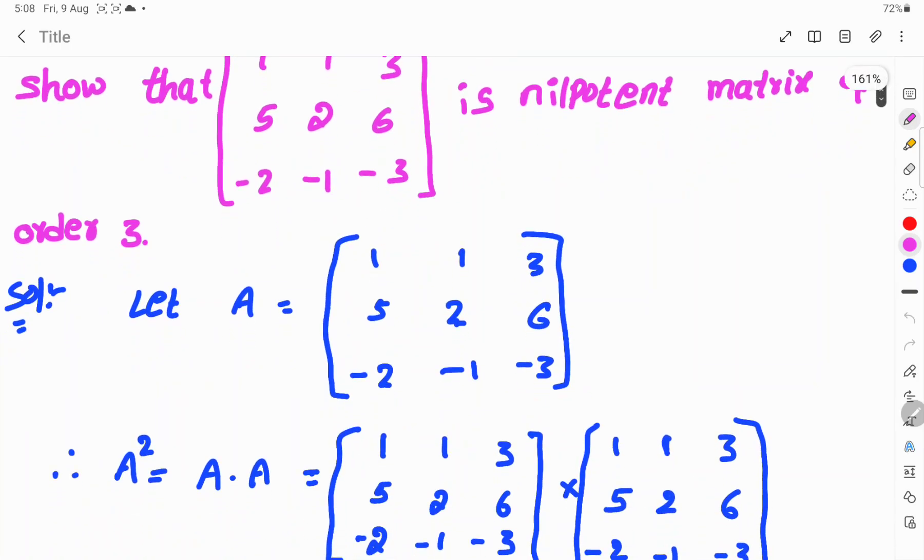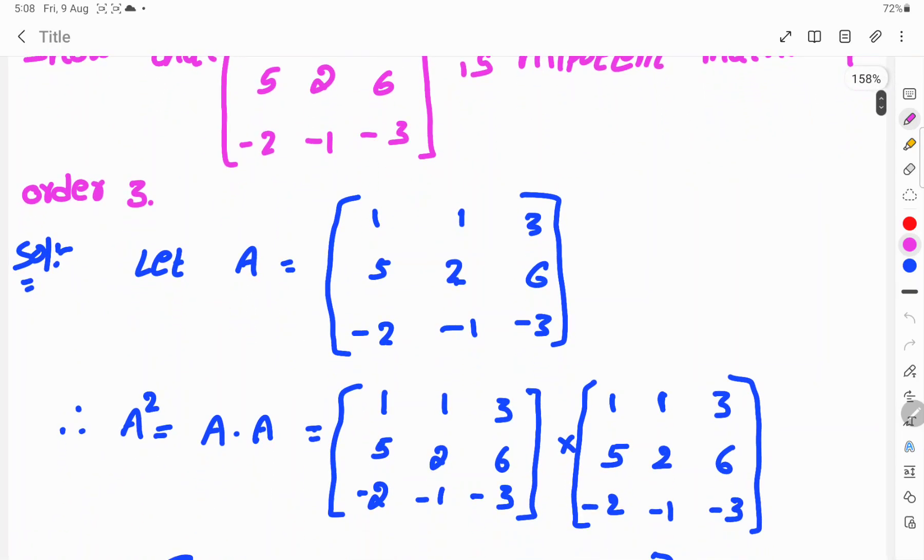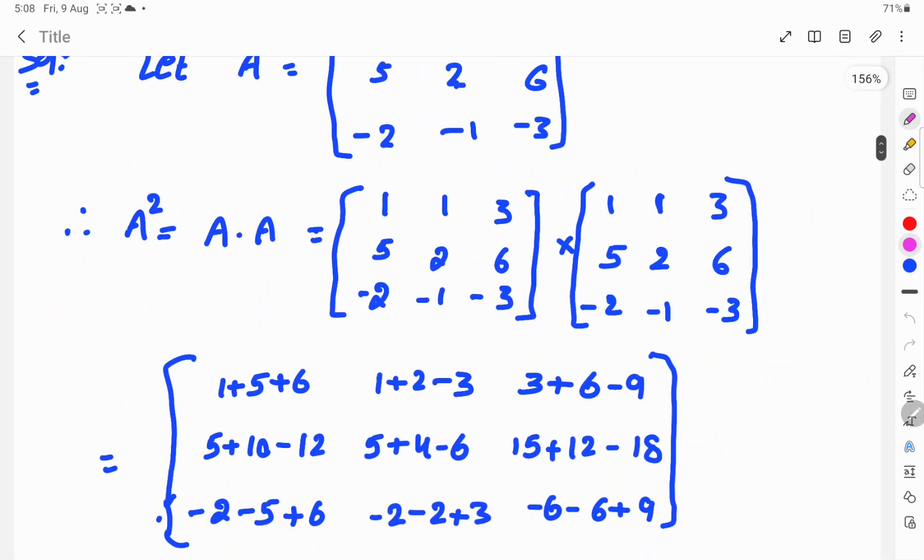So, first find A squared. A square means A into A. So, two times the A matrices. Then you will multiply the numbers.